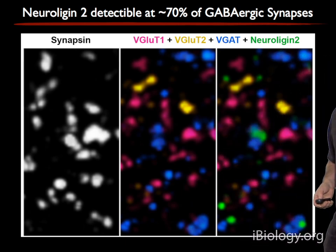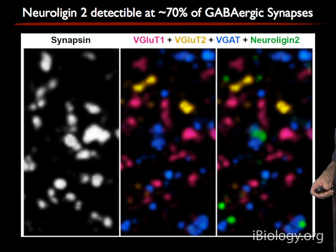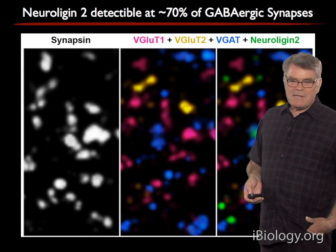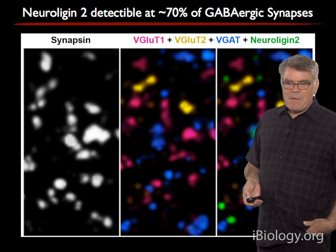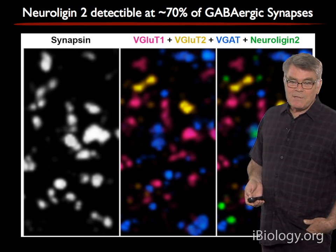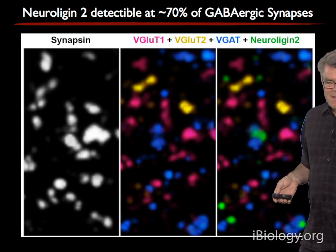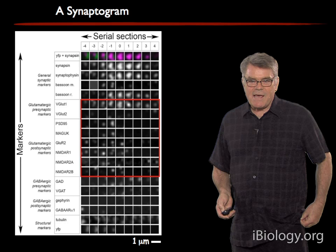Here's another slide representing synaptic markers in a piece of neuropil. These are outtakes from our work aimed at better understanding the molecular diversity of synapses. We see markers indicating that some synapses are glutamatergic excitatory, some are GABAergic inhibitory, some have neuroligin 2 — a particular molecule associated with a subset of inhibitory neurons — and so on. This is just to give you a better sense of what array tomography data looks like.